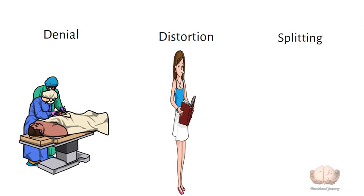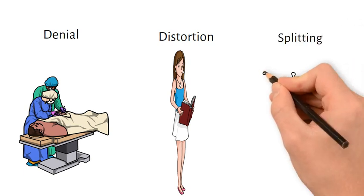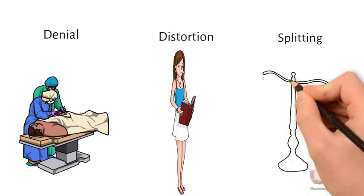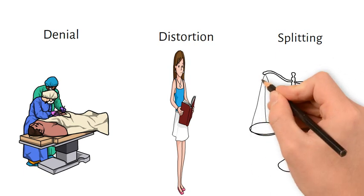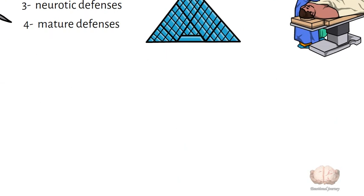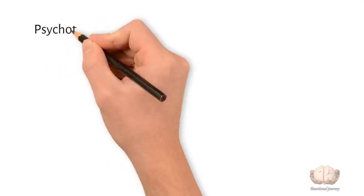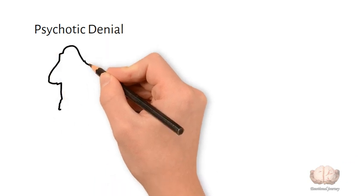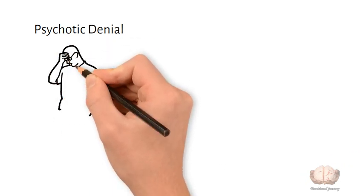Splitting: seeing people, events, or situations as completely good or completely bad with no middle ground, common in borderline personality disorder. Psychotic denial: complete disavowal of a distressing reality, even one's own thoughts or emotions. For example, someone having no memory of a psychotic episode.